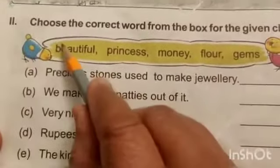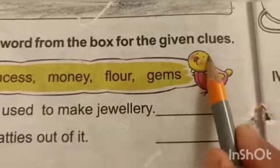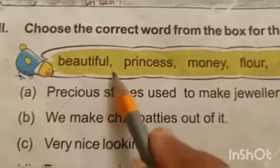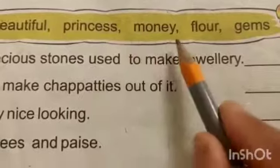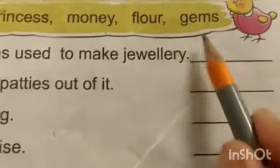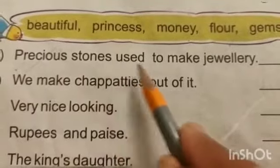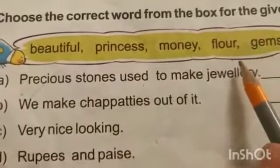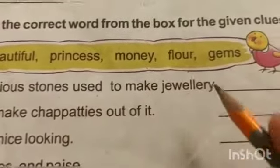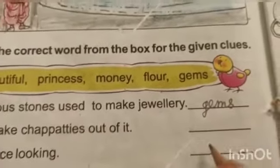Question number two: choose the correct word from the box for the given clues. Read the words: beautiful, princess, money, floor, gems. Number one — the clue is: precious stones used to make jewelry. You will find the word from this box. Yes — gems. Gems are precious stones.